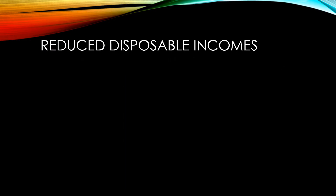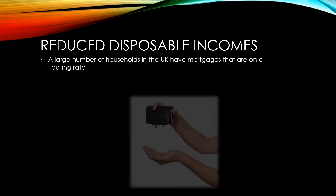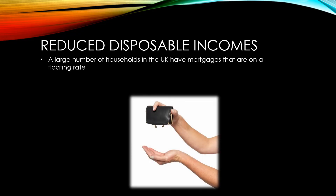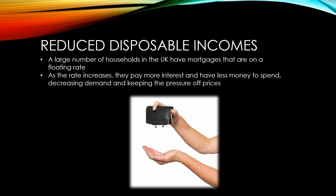A large number of households in the UK have mortgages that are on a floating rate, meaning they vary as the bank rate changes. As interest rates increase, mortgage holders pay more interest and have less money to spend at the end of the month — that is, less disposable income. This decreases demand and helps to keep pressure off prices.